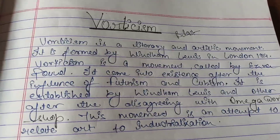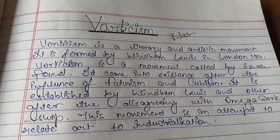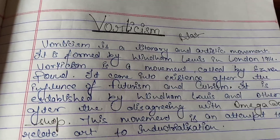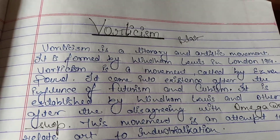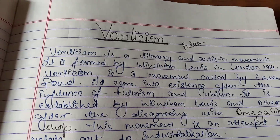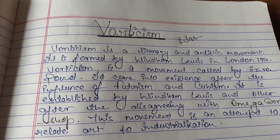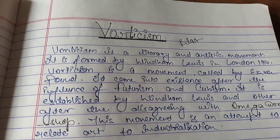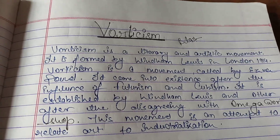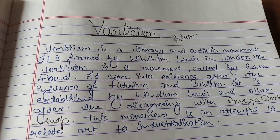The purpose of the Vorticist movement was to exploit the extraordinary talent of the avant-garde artists. Avant-garde was a movement that came in the modern age, and the main purpose of Vorticism was to channel that extraordinary talent.